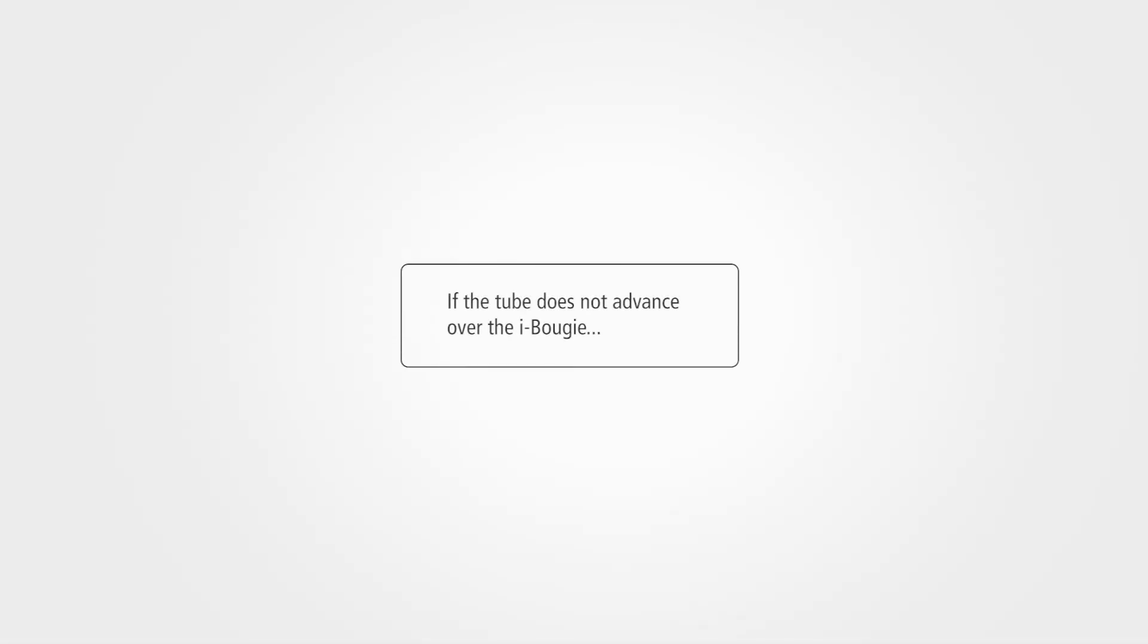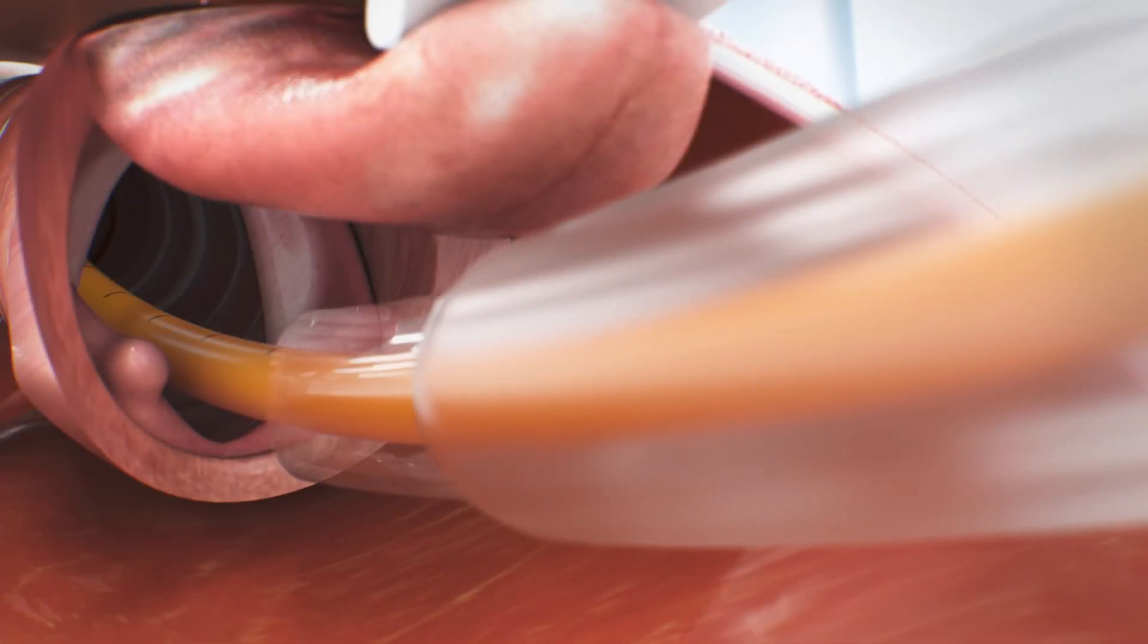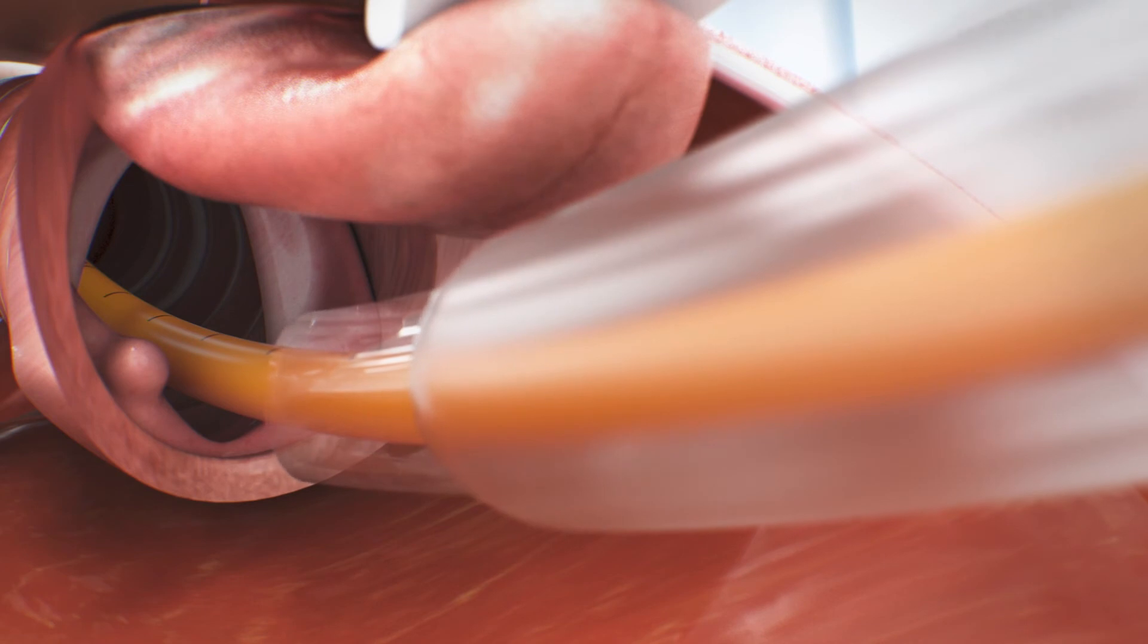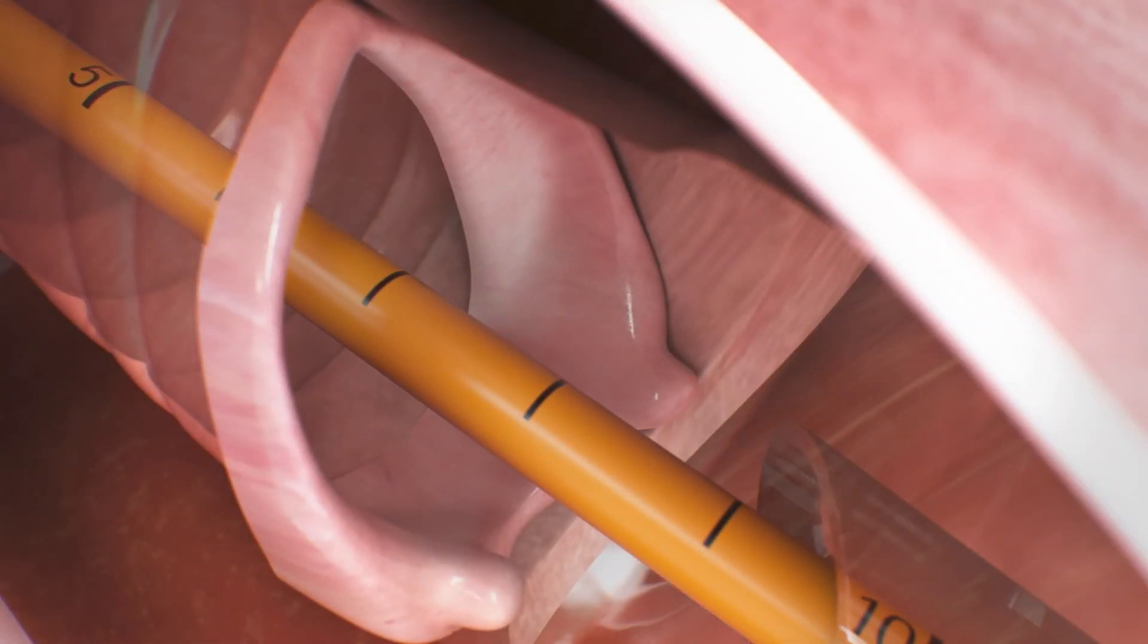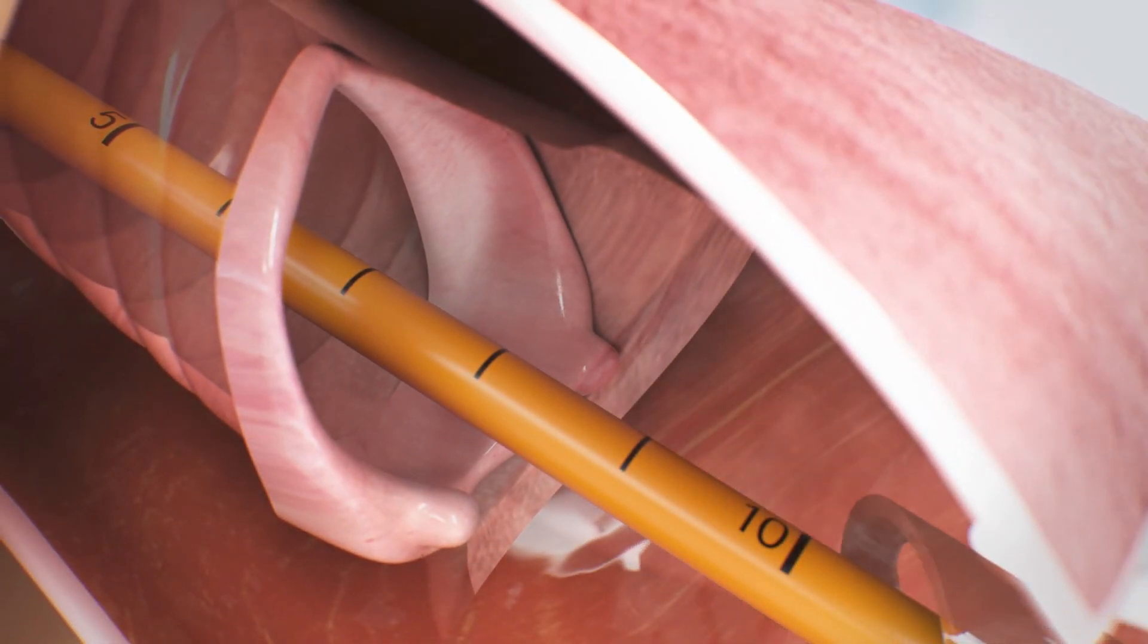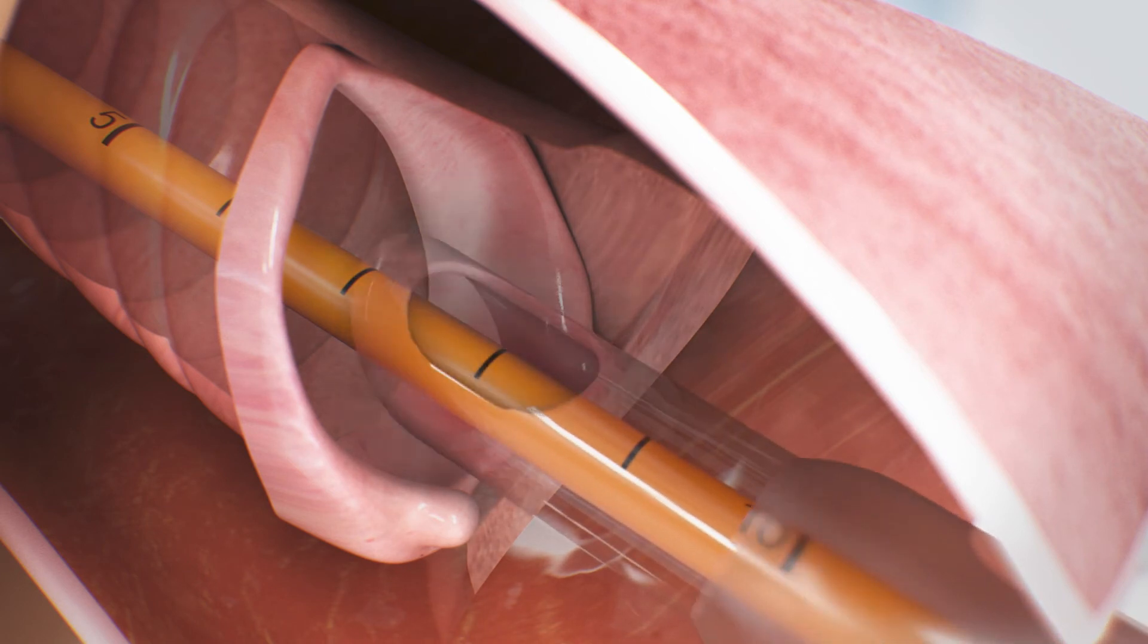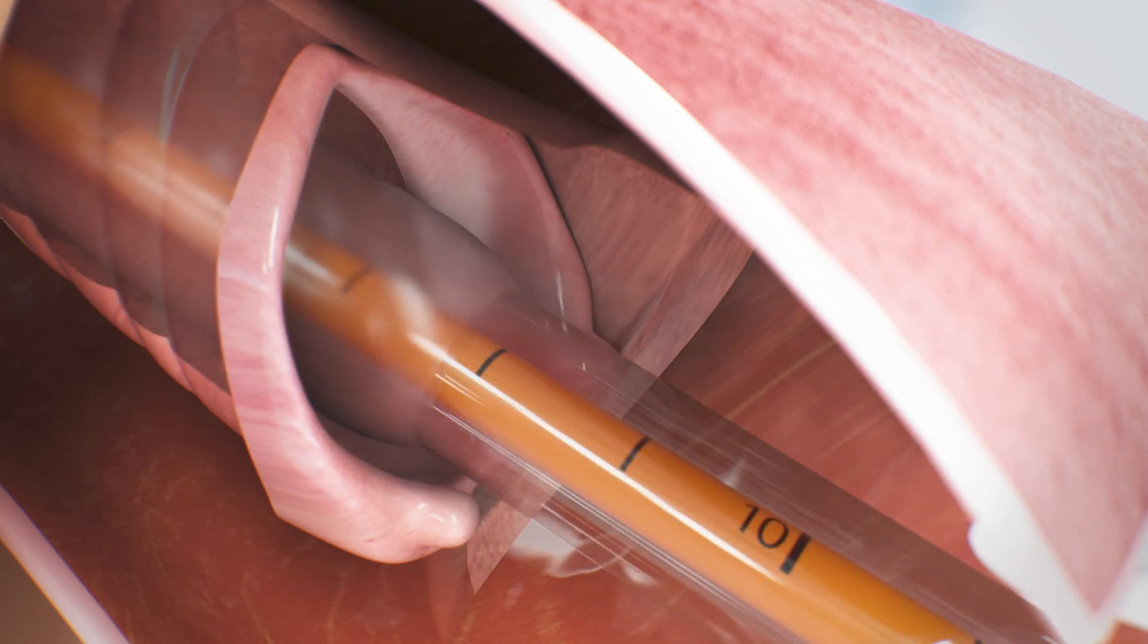If the tube does not advance over the EyeBougie, the beveled tip of the tube may have gotten caught in the arytenoids. In this case, pull back the tube about 2 cm and use a 90-degree anti-clockwise rotation to advance the tube through the vocal cords.